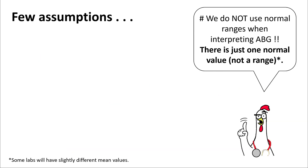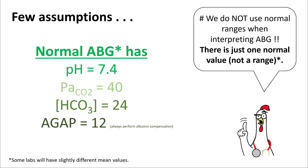In reading ABG, we do not use normal ranges — we use one value. A normal ABG has a pH of 7.4, pCO2 of 40, bicarb of 24, and an anion gap of 12. The anion gap can be adjusted for the level of albumin.